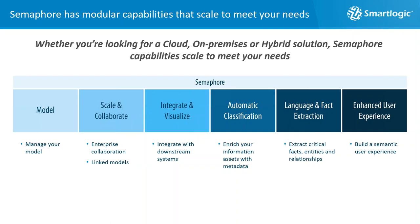The service is provided in a modular way. If all you want to do is manage your model, you get those capabilities. When you want to scale that model, leverage linked models inside or outside your enterprise, and collaborate across larger numbers of people, you can add scale and collaborate capabilities. When you want to start integrating with downstream systems, you add integrate and visualize capabilities.